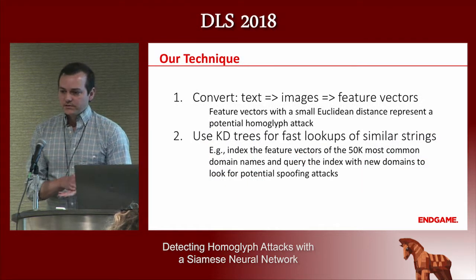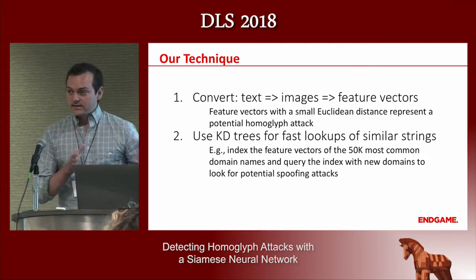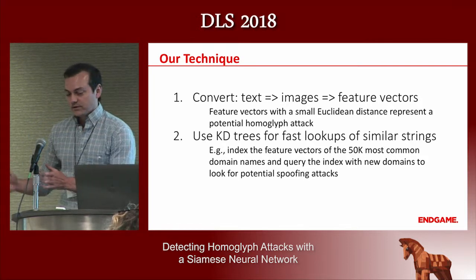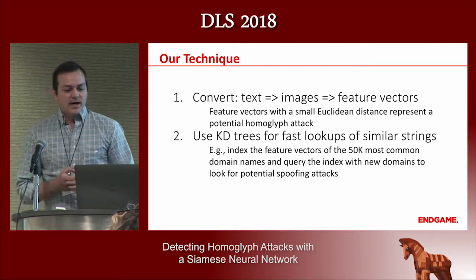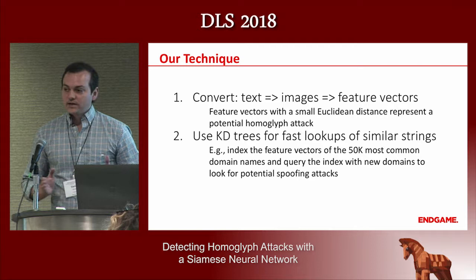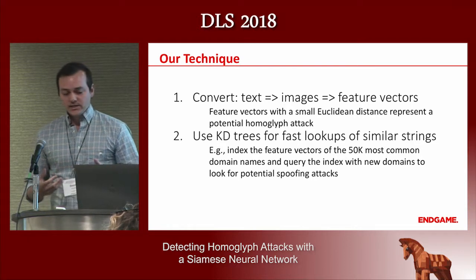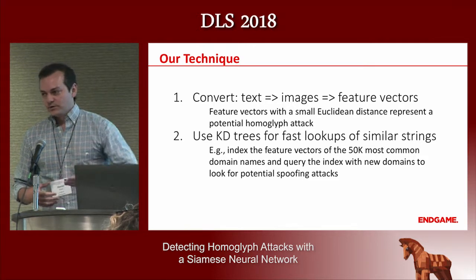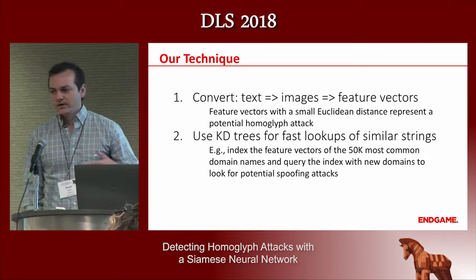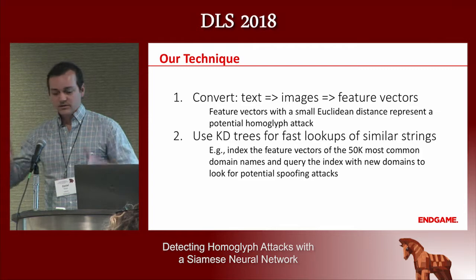What we decided to do is use images in security, which we think is a little underutilized. We take the text, convert it to an image, and then use the images to create a feature vector — that's where the deep learning portion starts. Anything with a small Euclidean distance between feature vectors represents strings that are very closely aligned and might be a homoglyph attack. As a practical part of this, we use KD trees to look up similar strings instead of a brute-force nearest neighbor search. For indexing, we use about 50K of the most common domain names and 50K of the most common processes — two problems solved in a similar streamlined way.